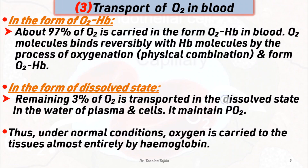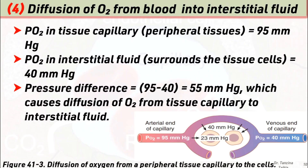Fourth, diffusion of oxygen from blood into interstitial fluid. The partial pressure of oxygen in tissue capillaries — that is, peripheral tissue — is about 95 mmHg, and the partial pressure of oxygen in interstitial fluid is about 40 mmHg. This pressure difference of 55 mmHg causes diffusion of oxygen from tissue capillaries into the interstitial fluid.